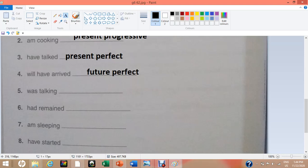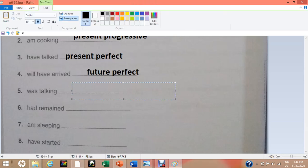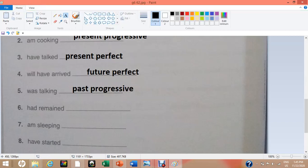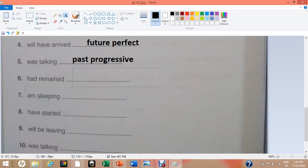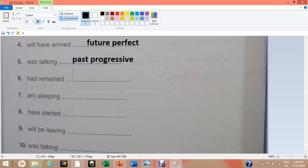Number five, was talking. Whenever there is a participle verb, it means the tense belongs to progressive format. Now was talking, definitely now the tense will be past progressive. Number six, had remained. We use the helping verb had only in the tense of past perfect. Past perfect.